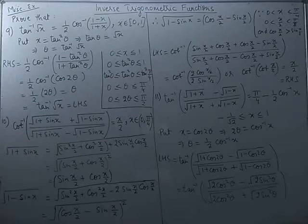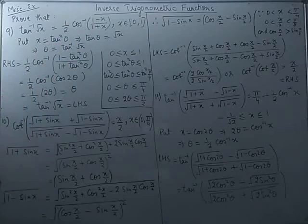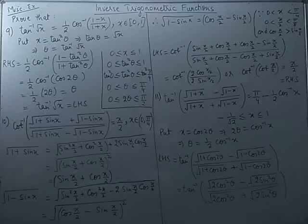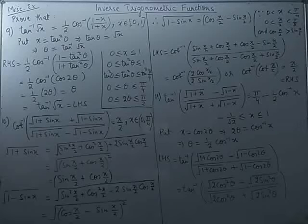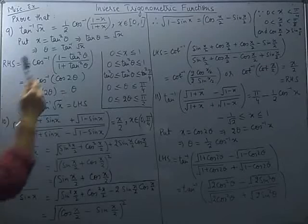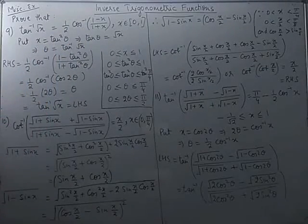We can proceed from the right hand side. If you look at the right hand side you will get a hint about what substitution should be used for x. We know that cos 2θ, sin 2θ, and tan 2θ can all be written in terms of tan θ. Keeping those results in mind, let us put x equal to tan squared θ.